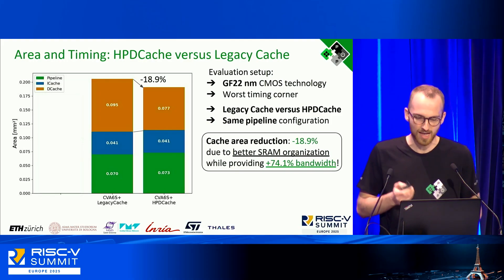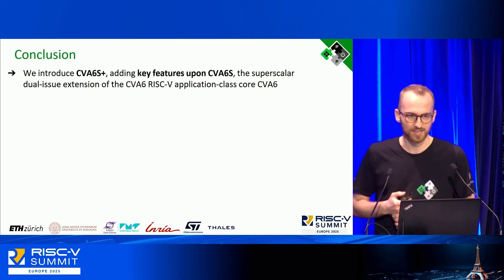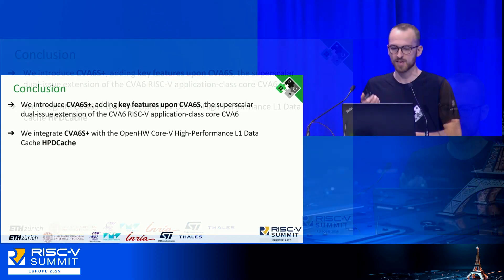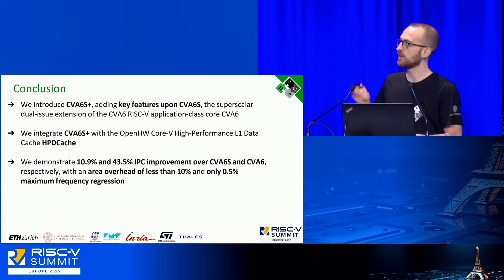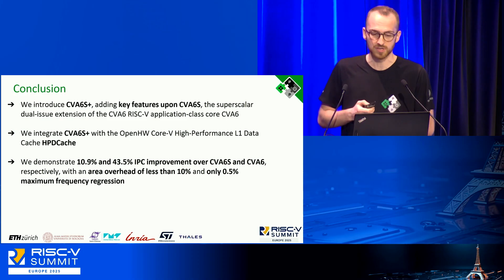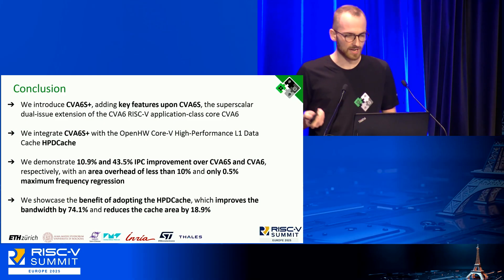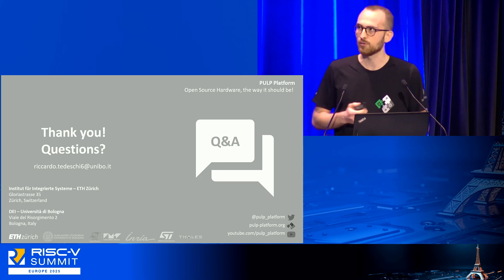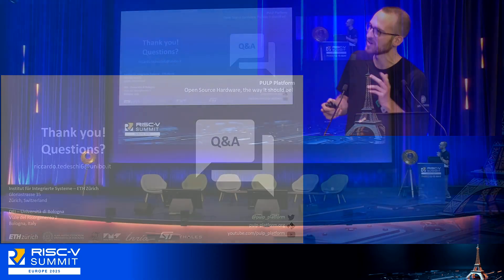To conclude, we introduced CVA6S-plus, the latest and most performant superscalar flavor of CVA6, integrated with the high-performance data cache. We demonstrated quantitatively the advantage of our changes, with reasonable costs in terms of area and timing regression, as well as for the cache. Thank you — I'm happy to take questions now, and I also invite you to visit our PULP platform booth for more questions about our open source RISC-V work.